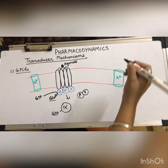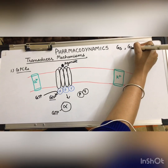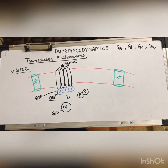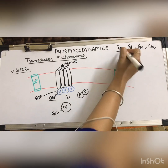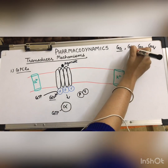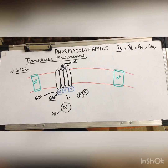Based on the alpha subunit, G proteins can be classified into four categories: Gs, Gi, Go, and Gq. All four categories have different functions. Gs proteins are responsible for the activation of adenylyl cyclase and also for calcium channel opening, whereas Gi proteins inhibit adenylyl cyclase and are responsible for the opening of potassium channels.